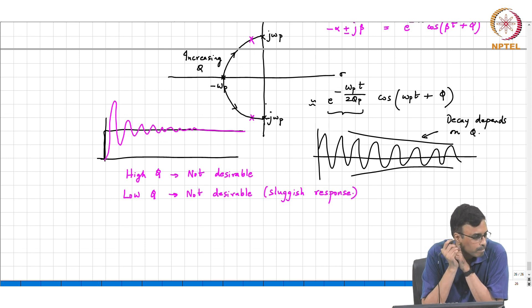So therefore, high Q is not desirable, low Q is not desirable. What is desirable then? Basically, like everything else in life, it is the middle path which makes sense. You do not want to have too much of anything or too little of anything.